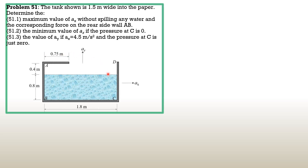For the first part, we have to assume that the resulting water surface crosses the front wall above C. Let's find out if that is possible. For the solution, let's equate the volume of air initial, which is 1.8 times 0.4 times 1.5 meters — but I'll just call the width b — to the resulting volume if the water surface crosses the front wall as shown. We'll call this y1, and 1.8 meters minus 0.75 gives 1.05 meters.